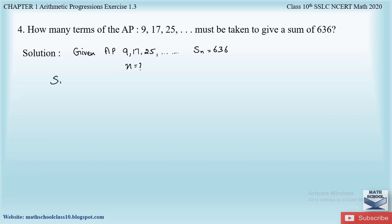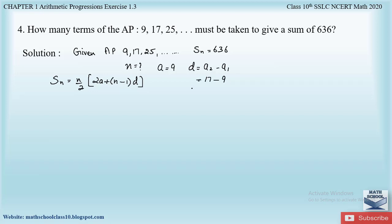Let us write down the formula: Sn = (n/2) × (2a + (n−1)d). From the given AP, the first term a = 9, and d = a₂ − a₁ = 17 − 9 = 8.